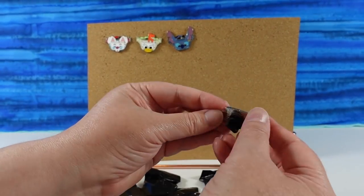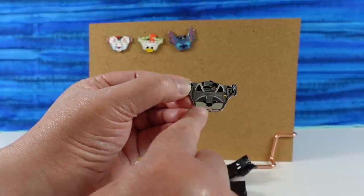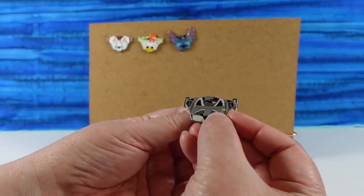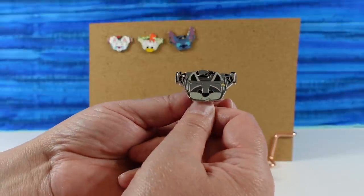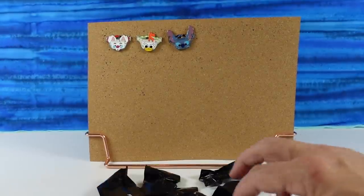Next fanny pack pin is, oh, is this Meeko? I think so. His little cheeks are so chubby, like he has some food in there or something. Very cute little adorable raccoon. I actually would wear this fanny pack. I like this one. Little Meeko.